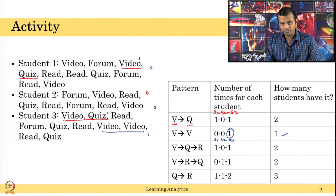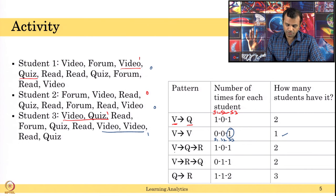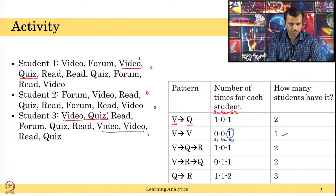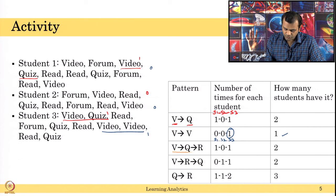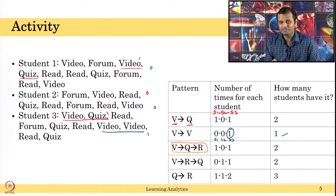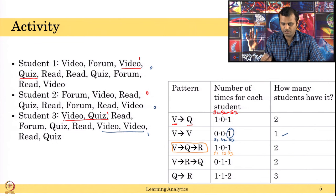If you can make sense of a 4-action sequence and it supports some inference for your hypothesis, please use that. Let us say we consider 3-action sequences: video, quiz, and read. Video → quiz → read occurred for student 1, not for student 2, and for student 3 — so 1, 0, 1. This means: whenever a student watches a video and takes a quiz, they immediately go back to read. This pattern occurred for S1 and S3, not for S2 — that is 2 students.